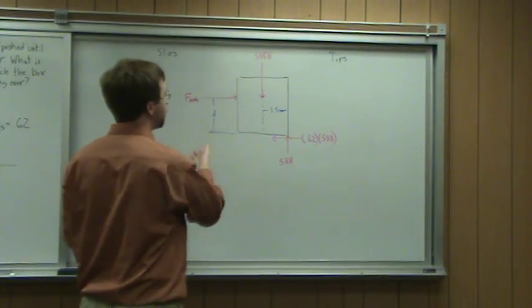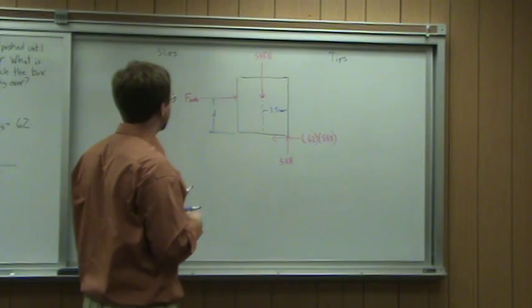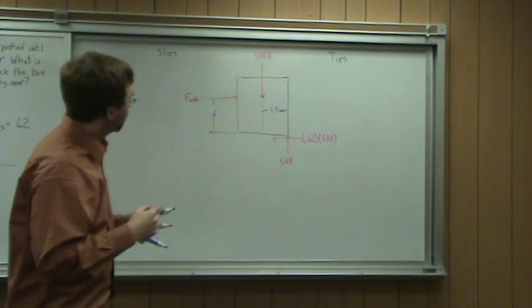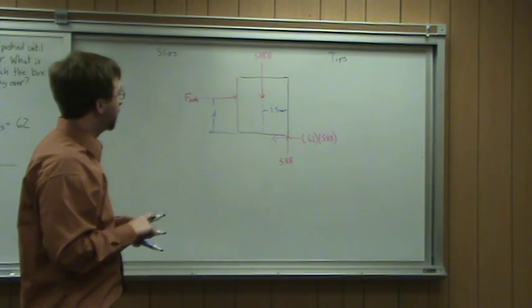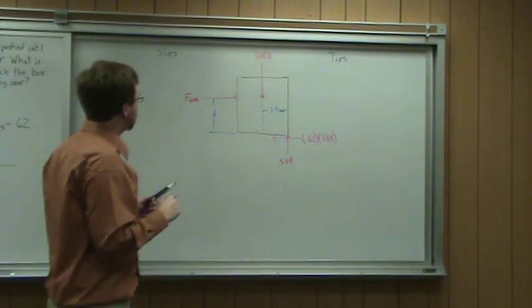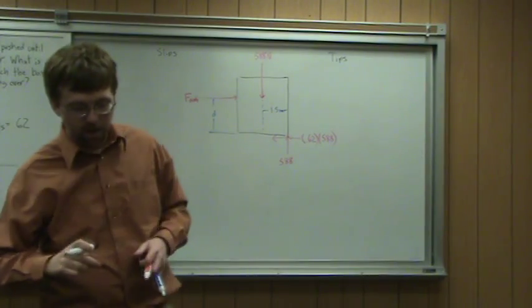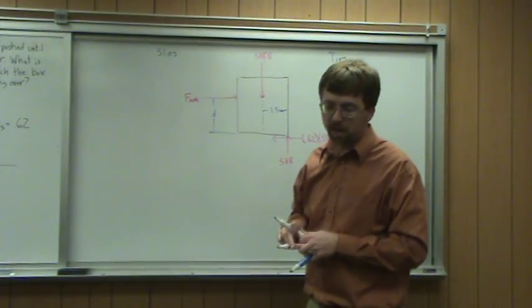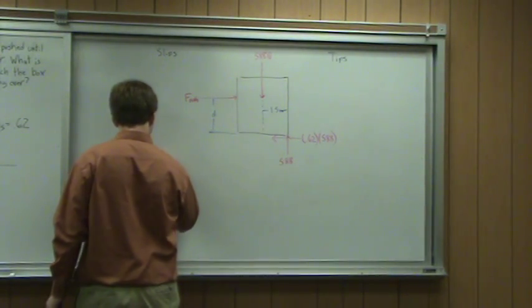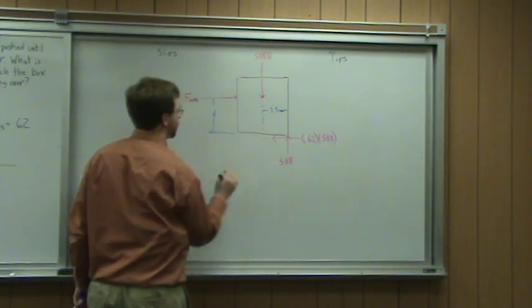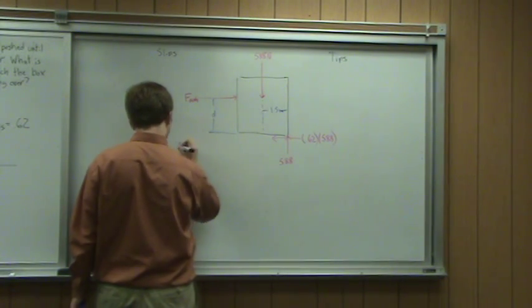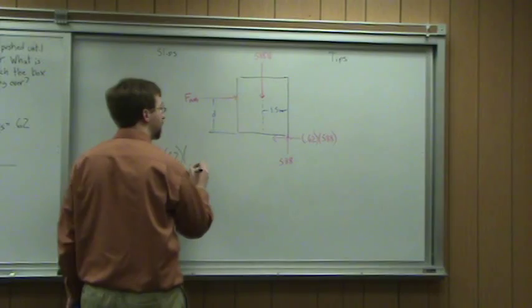Alright, so I know F push is the same in both of these scenarios. So let's figure out what this F push value is, and then we can set it equal in the two different scenarios. So F push for the slipping option is equal and opposite to this. So it's 0.62 times 588.